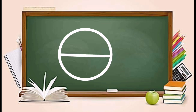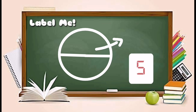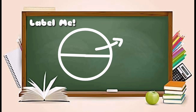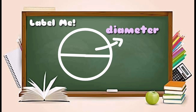Last part: It is a line segment that connects two points on the circle and passes through the center of a circle. Label Me. It's Diameter. Good job!